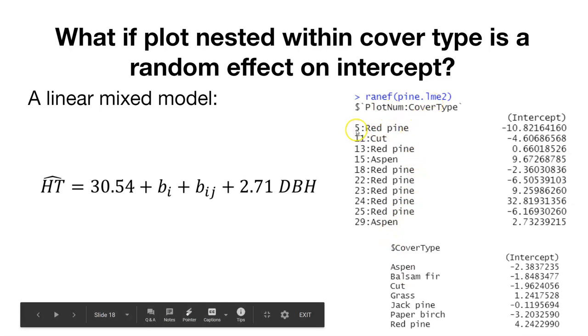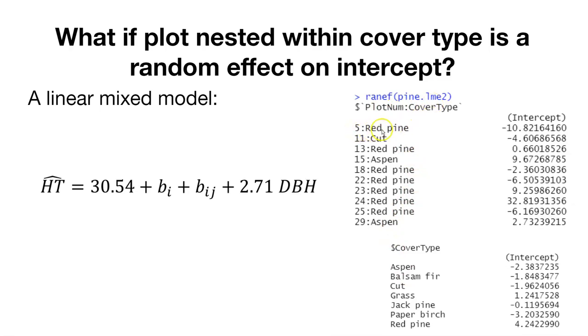We can compare them to the plot numbers within each cover type. As an example, this would be plot five in the red pine cover type, plot 11 in the cut cover type. If we were able to modify the intercept, as an example, in plot five in the red pine cover type, we would take away 10.82 from the intercept. That's how we would come up with a different estimate of the tree height based on the random effects.